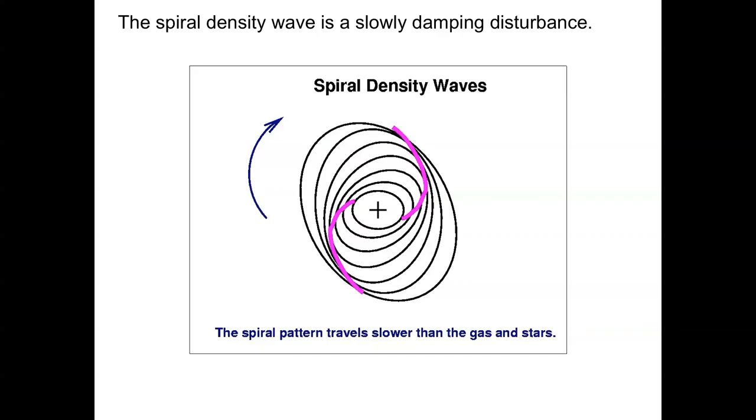It turns out that the pattern of the spiral travels slower than the gas and the stars over much of the inner part of the disk of the galaxy. So stars and gas pass into the pattern, slow down, and then pass out of it again, getting somewhat more dense when they're moving more slowly, just like in our traffic analogy.